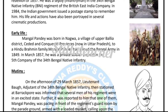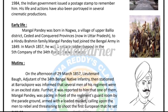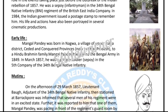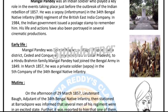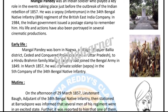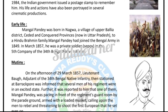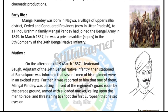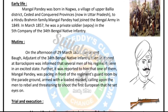It was further reported that one of them, Mangal Pande, was pacing in front of the regiment's guard room by the parade ground, armed with a loaded musket, calling upon the men to rebel and threatening to shoot the first European that he set eyes on.